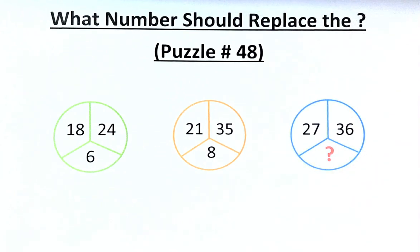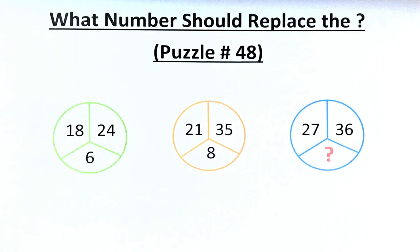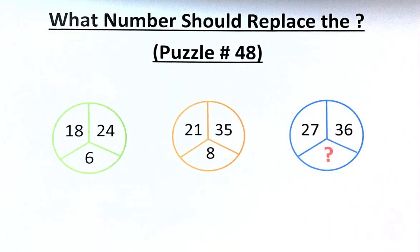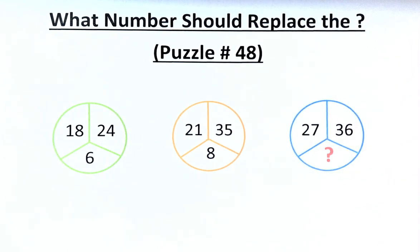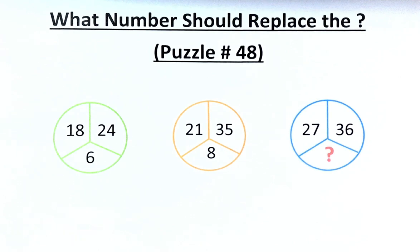Welcome back to the solution of puzzle number 48. What number should replace the question mark? In the green circle the numbers are 18, 24 equals 6. Orange circle 21,